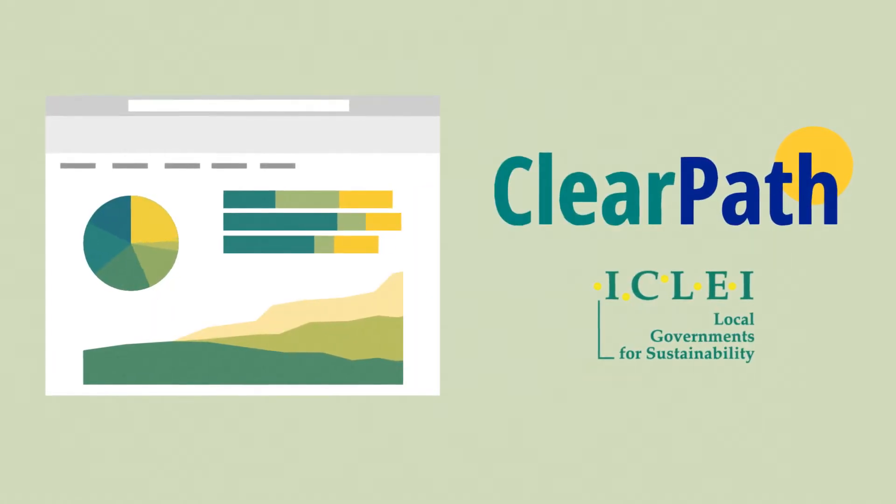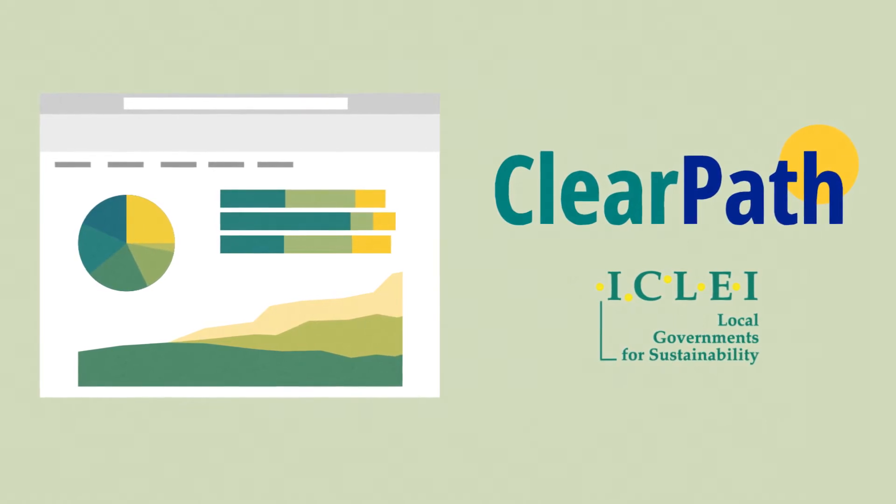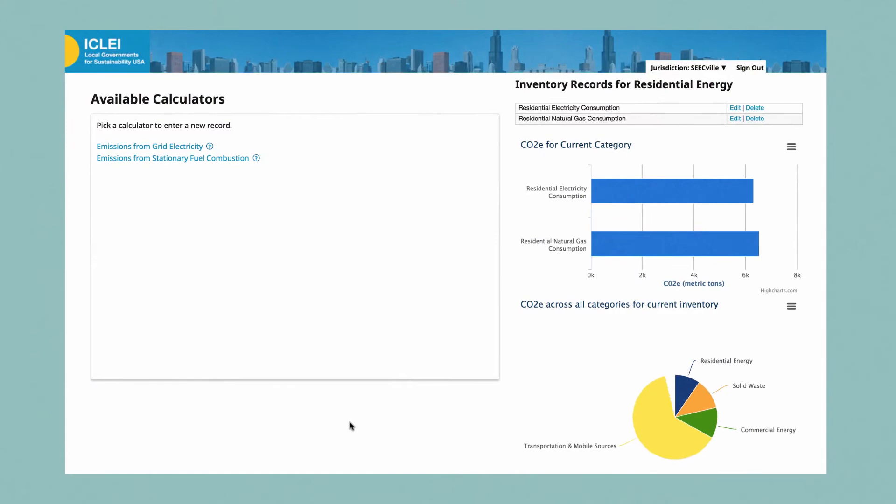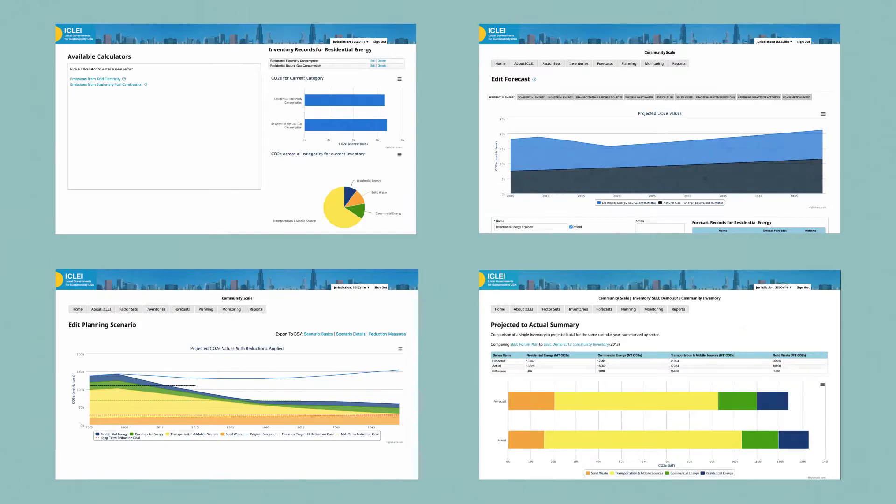ICLEI's powerful online application, ClearPath, dramatically improves how cities use data to meet their climate goals. ClearPath is a comprehensive emissions management platform that guides local governments through a proven step-by-step process for cutting carbon pollution.